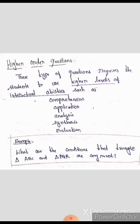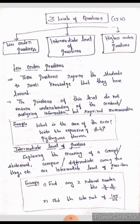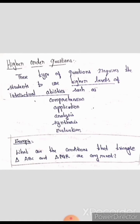Higher-order questions require students to use a higher level of intellectual ability. These are called HOT — higher-order thinking — questions, which improve higher-order thinking. Such questions involve comprehension, application, analysis, synthesis, and evaluation. For example: what are the conditions that triangle ABC and triangle PQR are congruent? Lower-order questions check previous knowledge; intermediate questions go further; and higher-order questions require a higher level of thinking, increasing intellectual abilities.